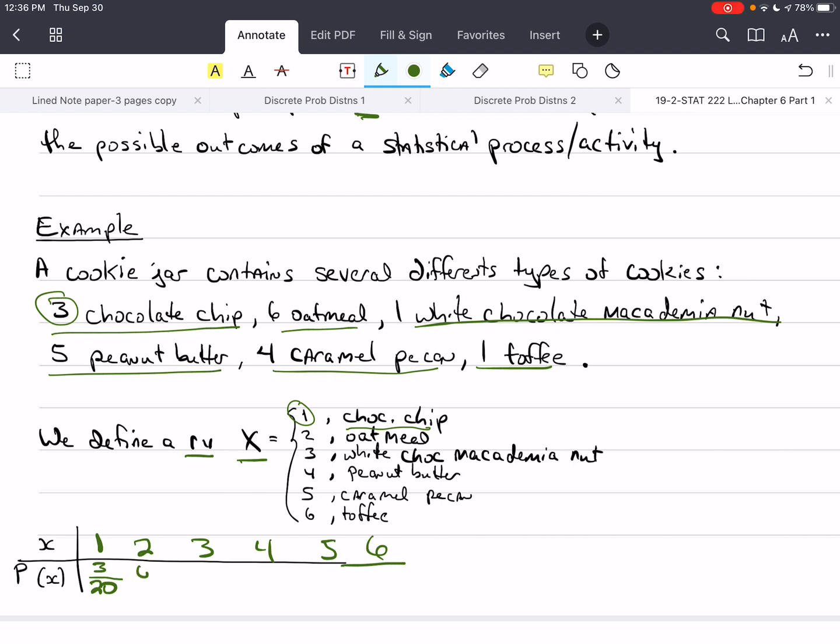If I'm going to randomly select one cookie from there, what is the probability that it's going to be chocolate chip, or that X is equal to 1? There's 3 chocolate chip cookies out of 20, so it's going to be 3 out of 20. We can do the same thing with 2, 3, 4, 5, and 6. Oatmeal, there's going to be 6 of those out of 20. White chocolate macadamia nut, only 1. 5 peanut butter out of 20, 4 caramel pecan out of 20. 1 toffee out of 20. If we total all these up, 3 plus 6 is 9, plus 1 is 10, plus 5 is 15, plus 4 is 19, plus 1 is 20 over 20, which is equal to 1, which is the probability of the entire sample space, which is exactly what we expect.